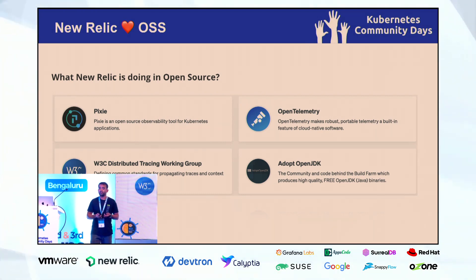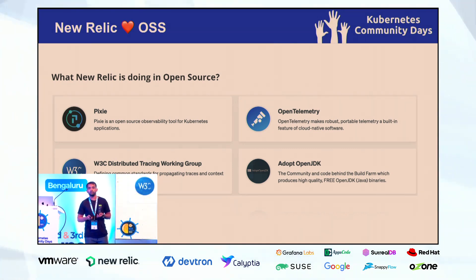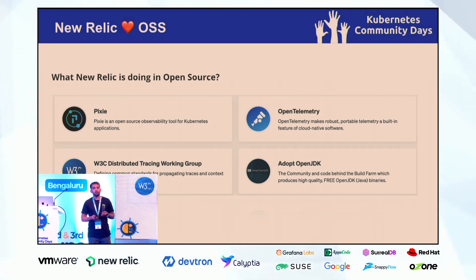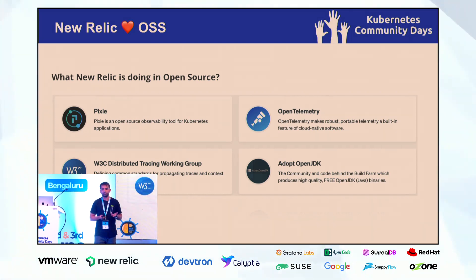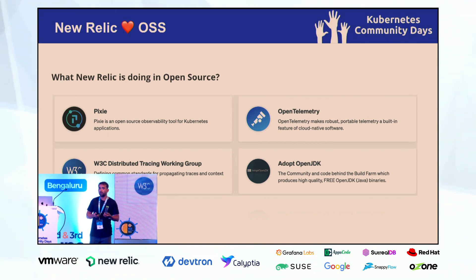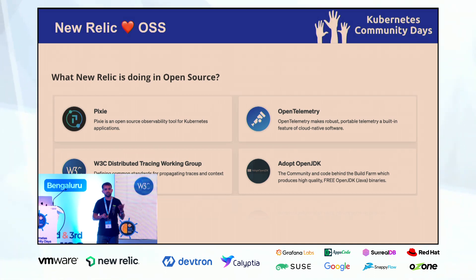Next up is OpenTelemetry. The adoption for OpenTelemetry is picking up pace and is also at its peak. It's one of the fastest growing CNCF projects, right behind Kubernetes. New Relic is a proud and major contributor to the OpenTelemetry project. We are also working with W3C in setting up standards for distributed tracing, which is becoming increasingly important given the cloud and SaaS world growing everywhere.